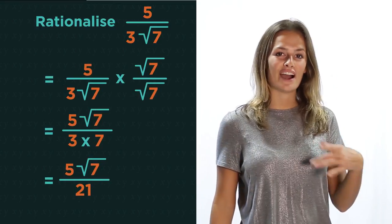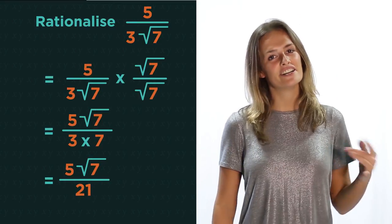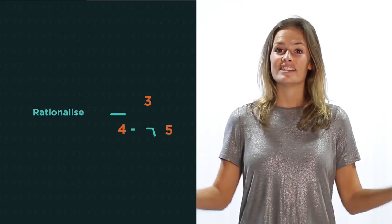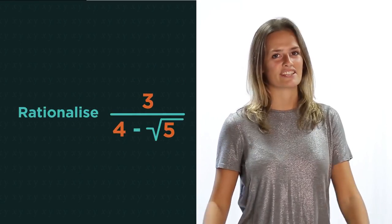Did you get it right? 5 root 7 over 21. So let's have a look at a trickier example.